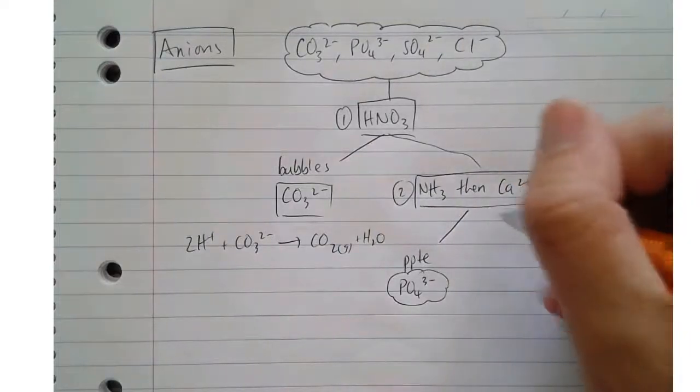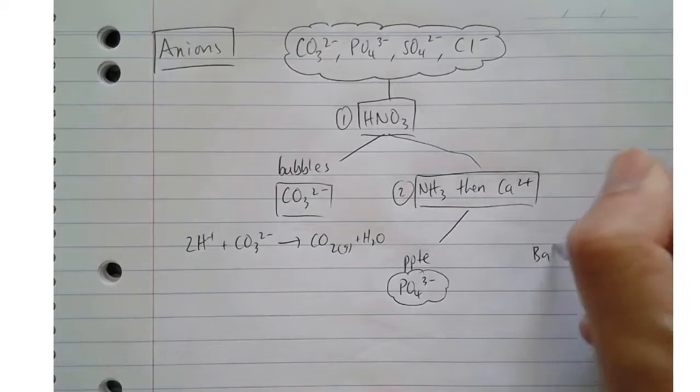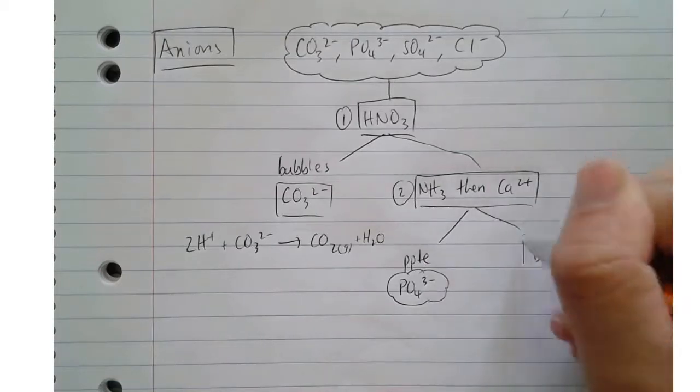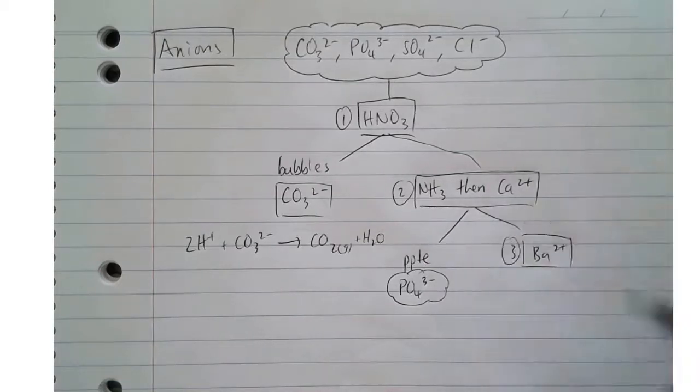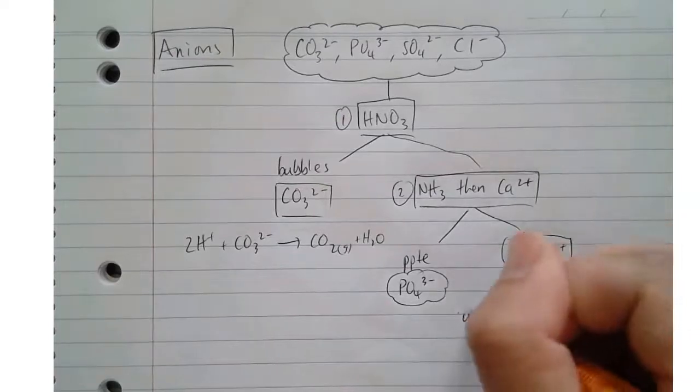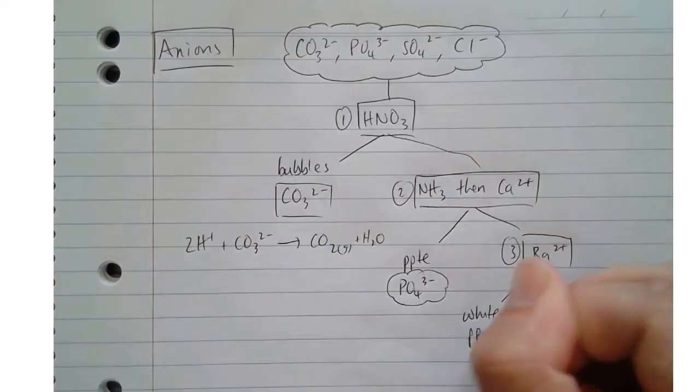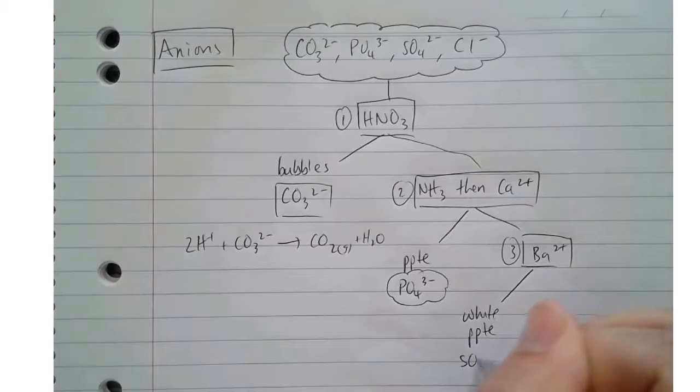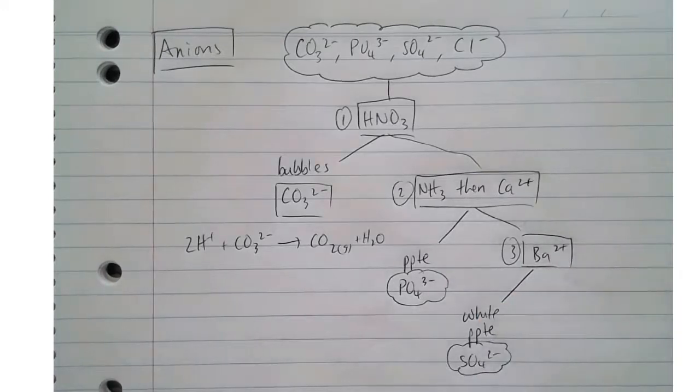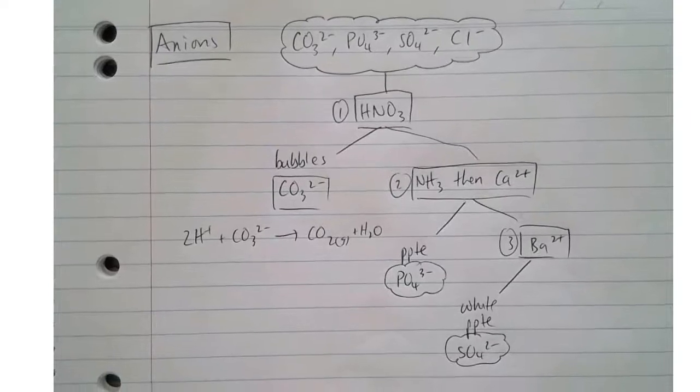And so then the next thing that we can add is a source of barium ions. What we would get is that we get a white precipitate if it's sulphate. Just like we used previously to actually test for barium.